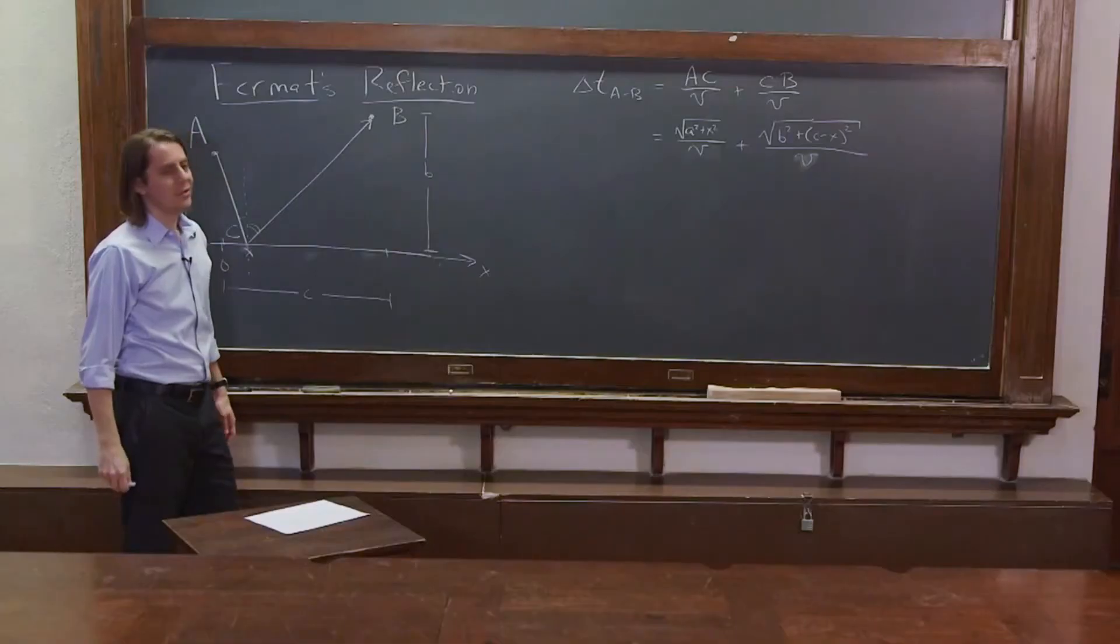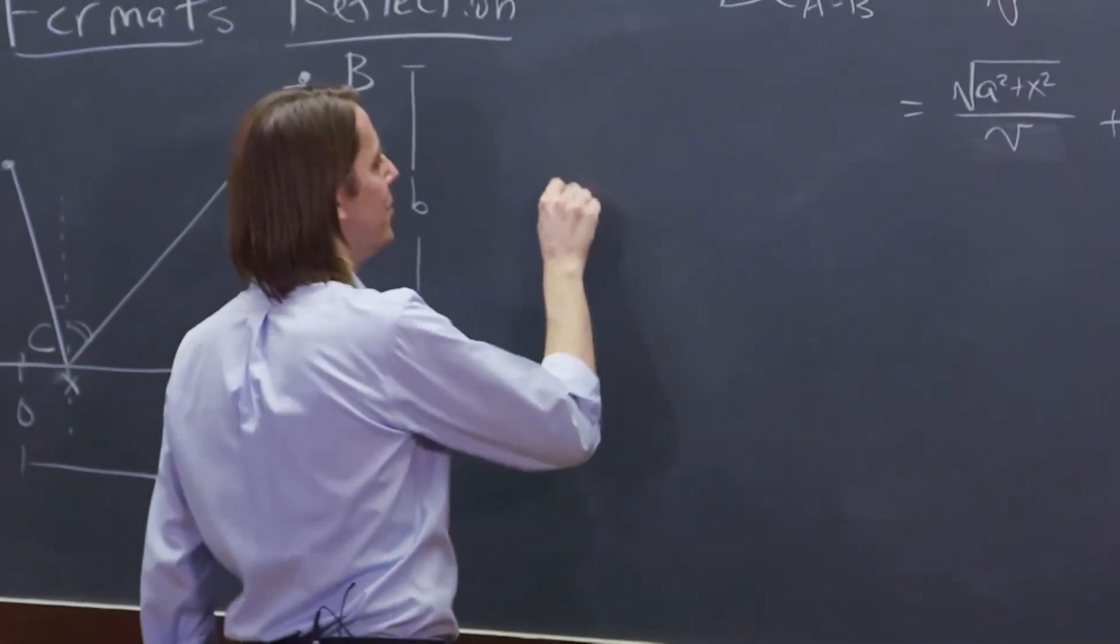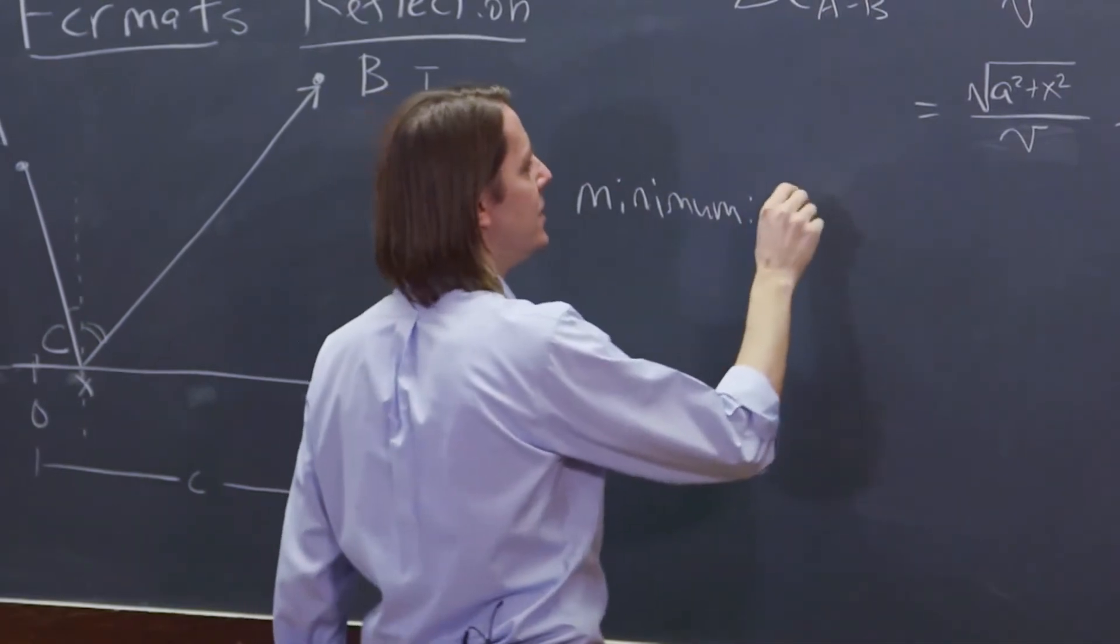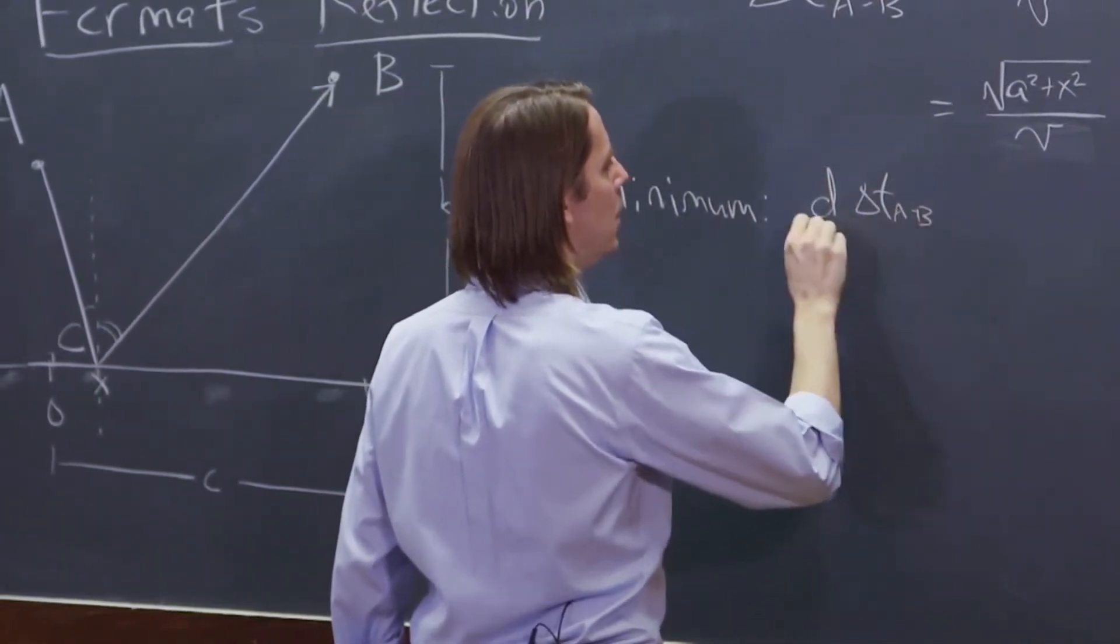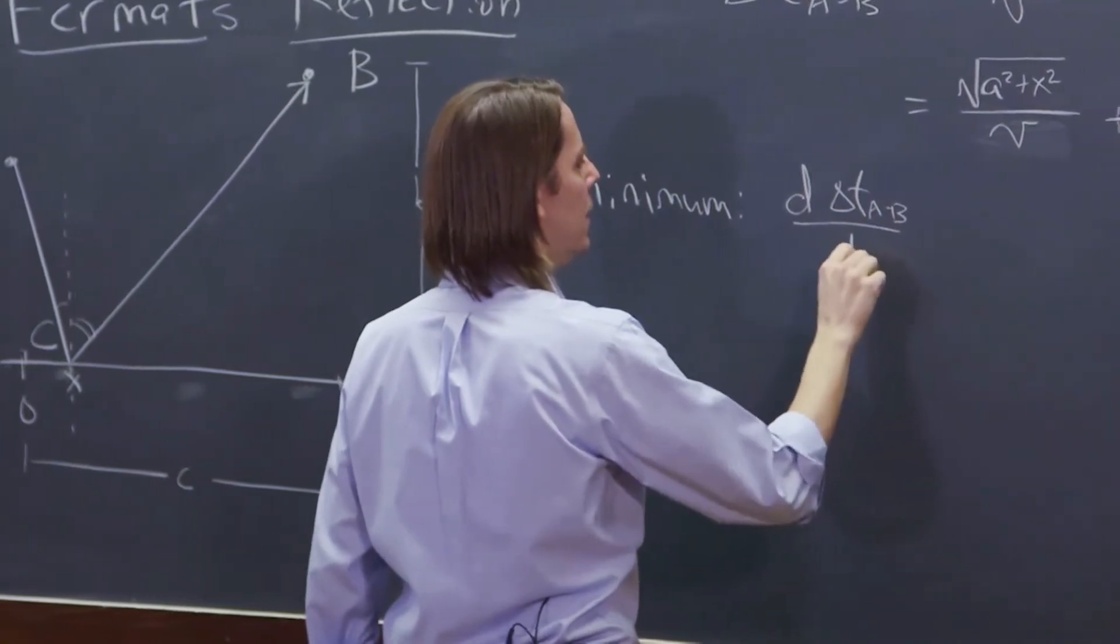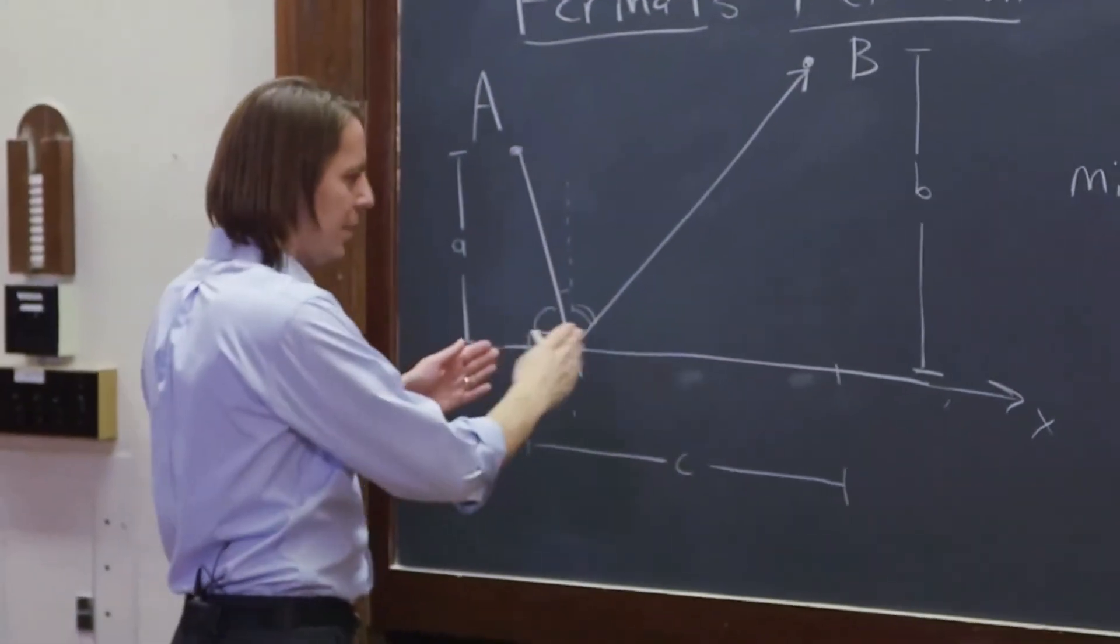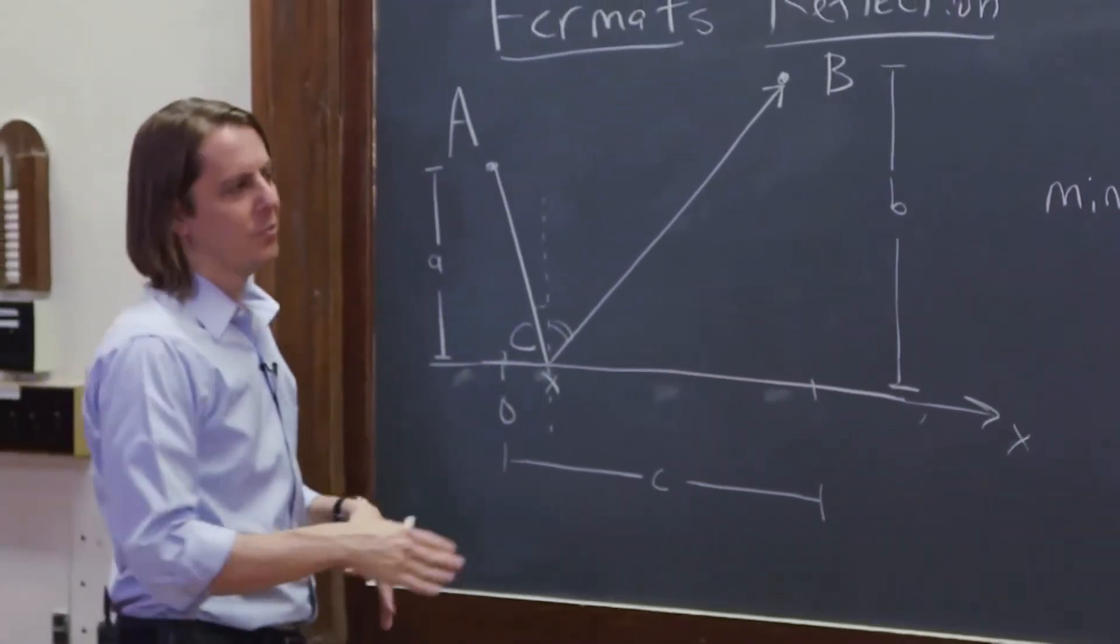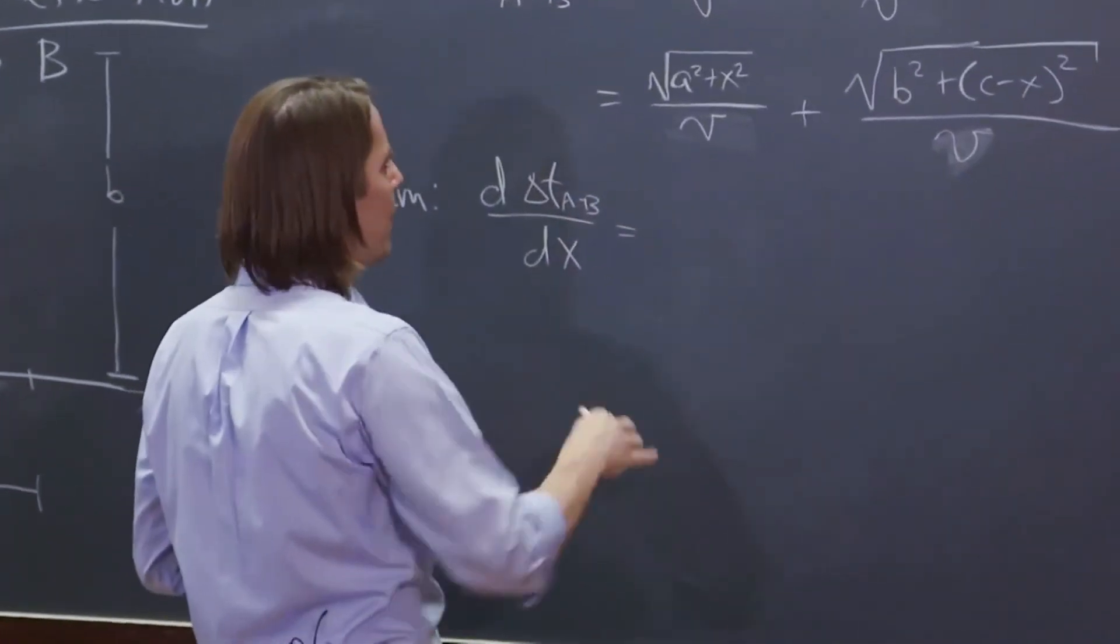Now, Fermat said that it would go in the least time. So what we need to do is minimize delta T. Find the minimum. And the way you do that is you take the derivative with respect to that position. We're saying when we take it all these different places, it could reflect which one has the minimum time. This will find an extremum, but we're going to assume it's the minimum.